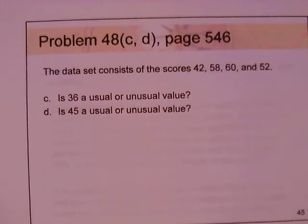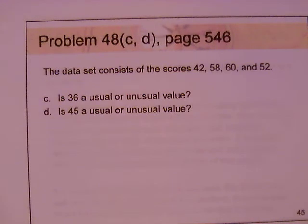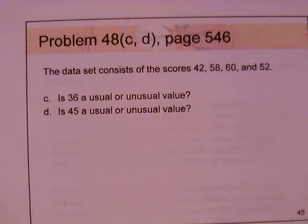Take a look at problem number 48, parts C and D. The data consists of scores 42, 58, 60, and 52. This is a continuation of problem 48 — parts A and B were done previously, where we calculated the mean and standard deviation. The mean for that data set was 53 and S, the standard deviation, was 7.